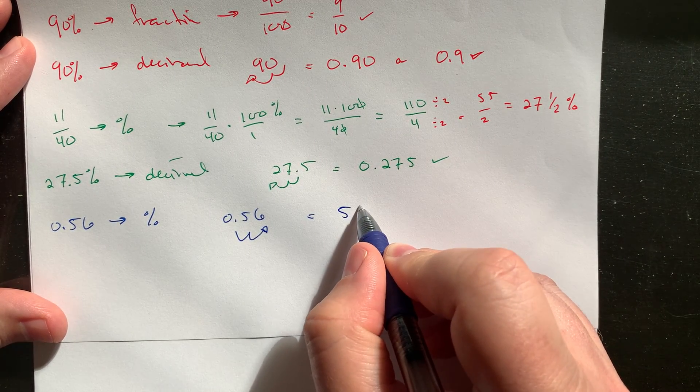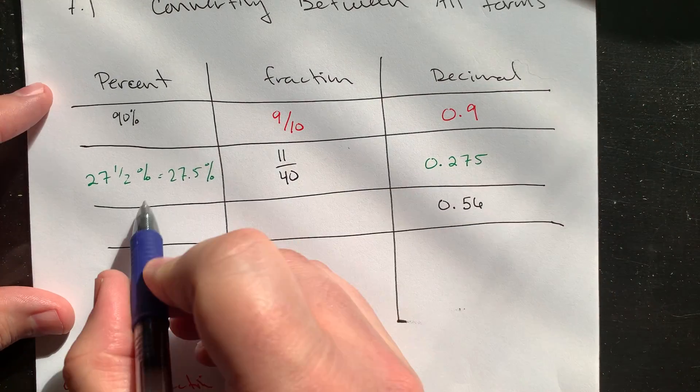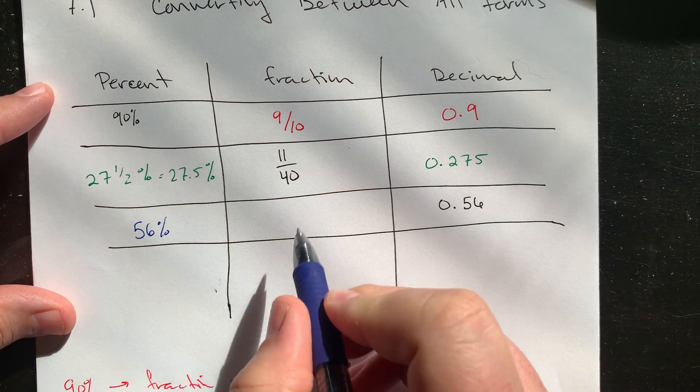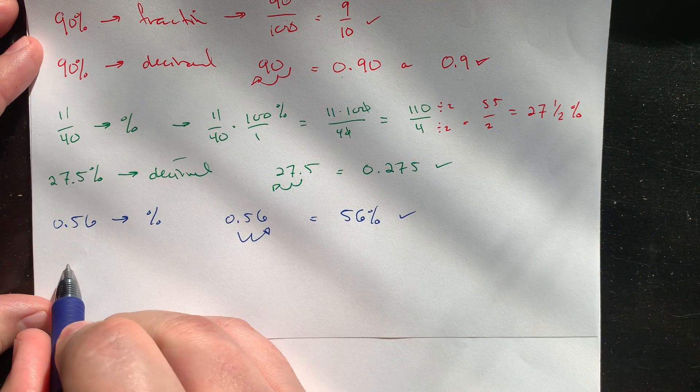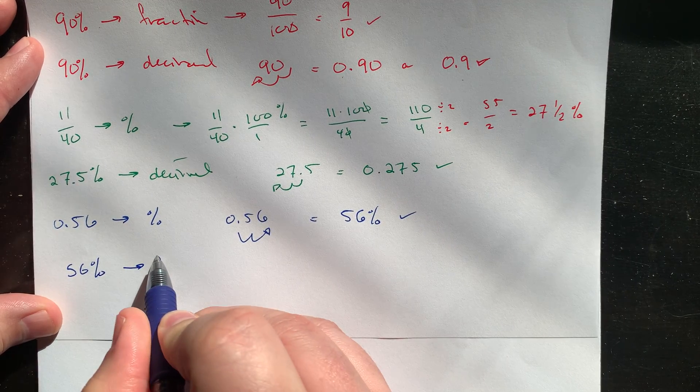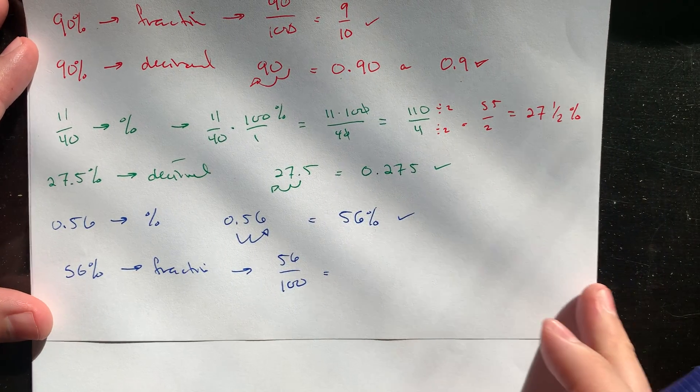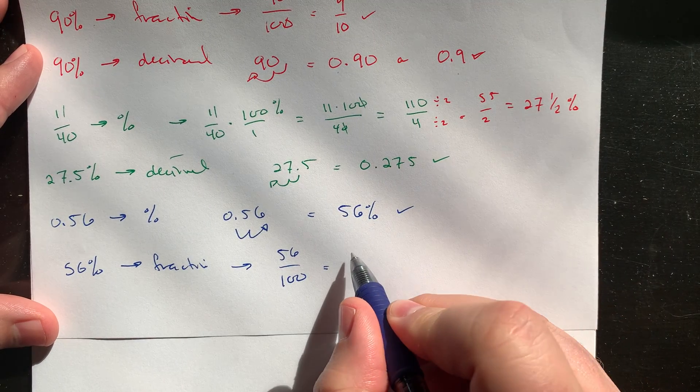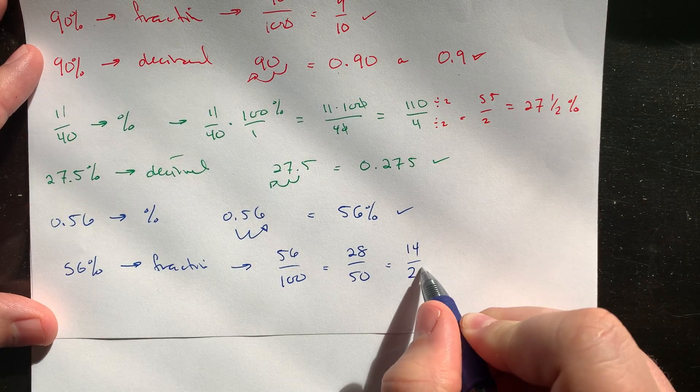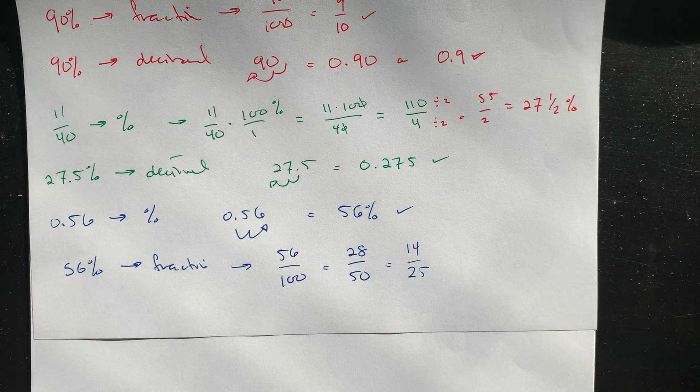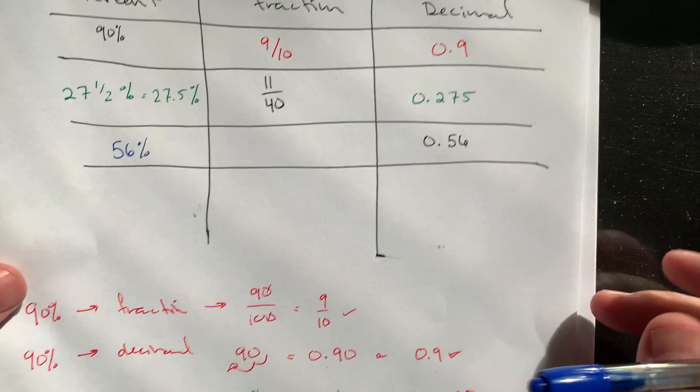56%. And then if I know 56%, I can then convert that into a fraction. Become a 56 over 100. And then that we can just sort of reduce. So 56 over 100. If we do division by 2, this would be what? Kind of a 28 over 50 would be 14 over 25 or something. That sounds right to me. Yeah, because we're really just sort of dividing this by 4. That's as good as that's going to get.